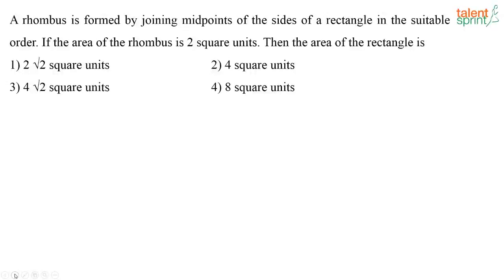A rhombus is formed by joining the midpoints of the sides of a rectangle in the suitable order. If the area of the rhombus is 2 square units, what is the area of the rectangle? So what is done here? What will be the answer for this one?